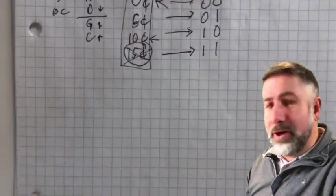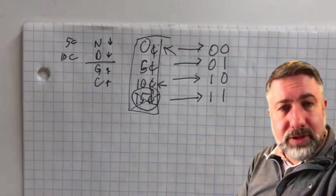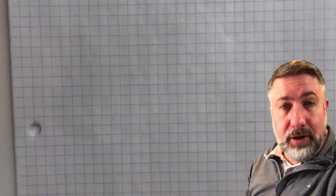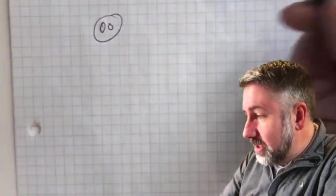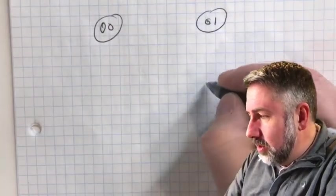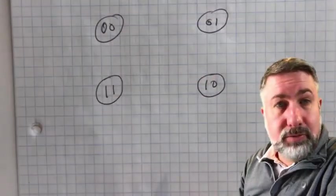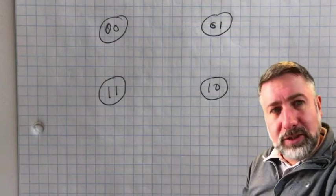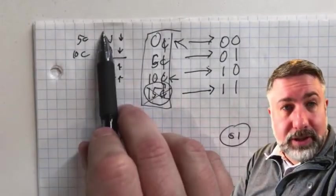Now we want to think about how to get from one state to the next, so we draw out a state diagram. We have four states: 00, 01, 10, and 11. We also have two inputs — a nickel and a dime — and we need to think about how to handle those transitions.